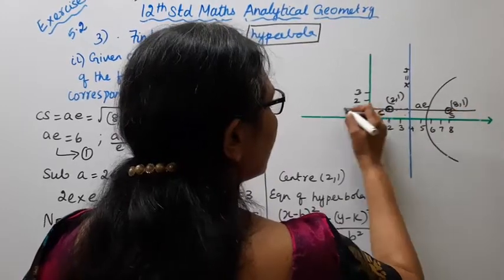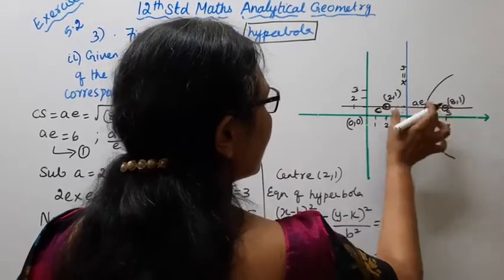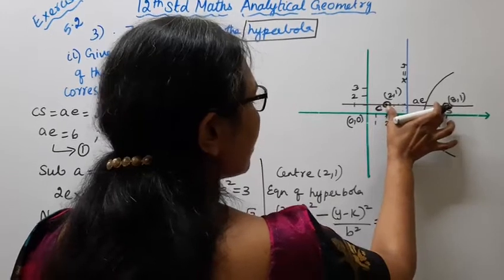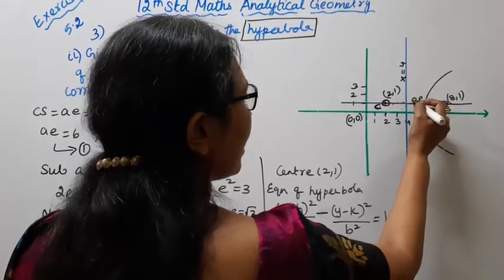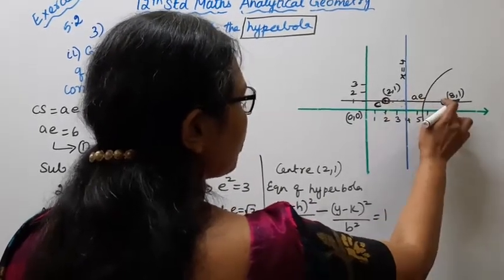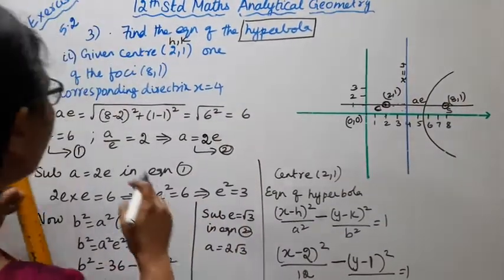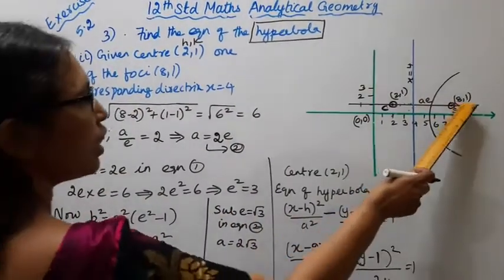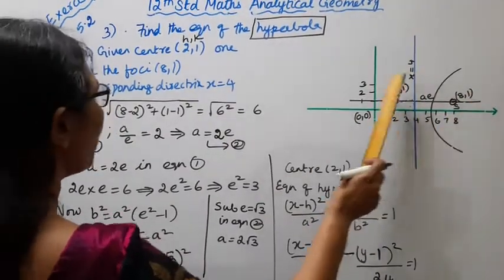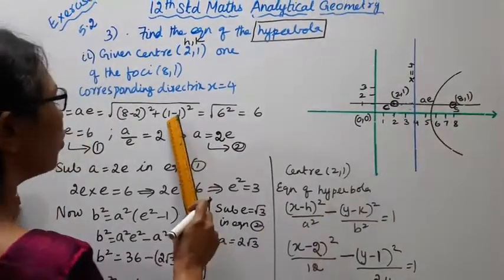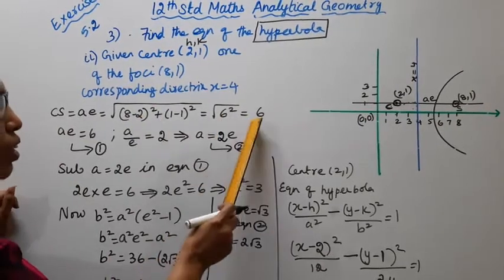This is the line. This is c, this is s. The distance ae is equal to the distance from center to focus: root of (8 minus 2) squared plus (1 minus 1) squared, that is equal to 6 squared, that is equal to 6.